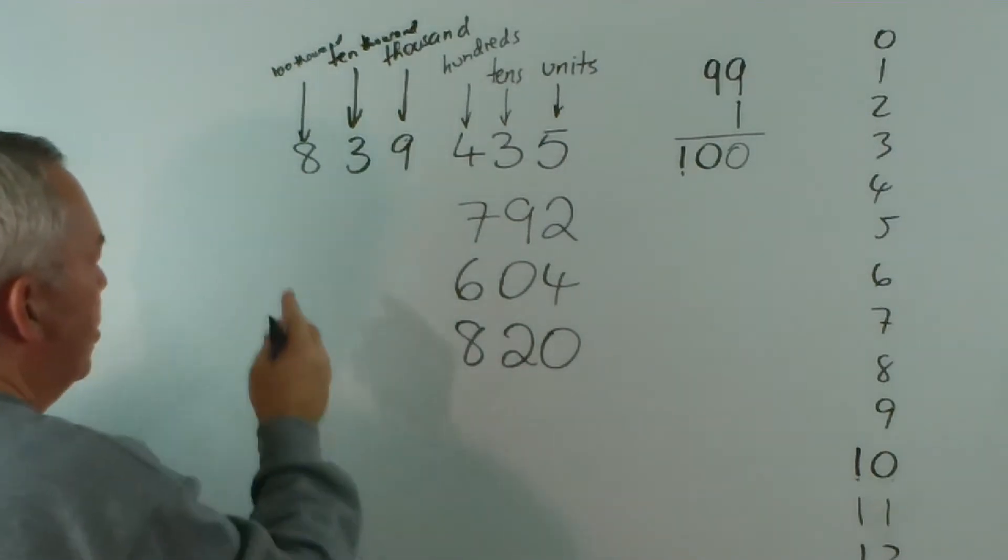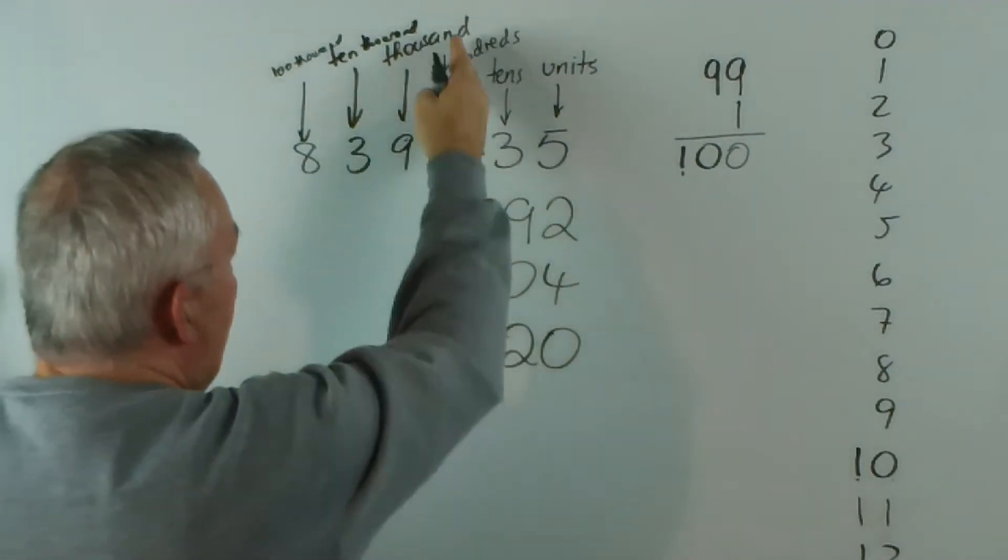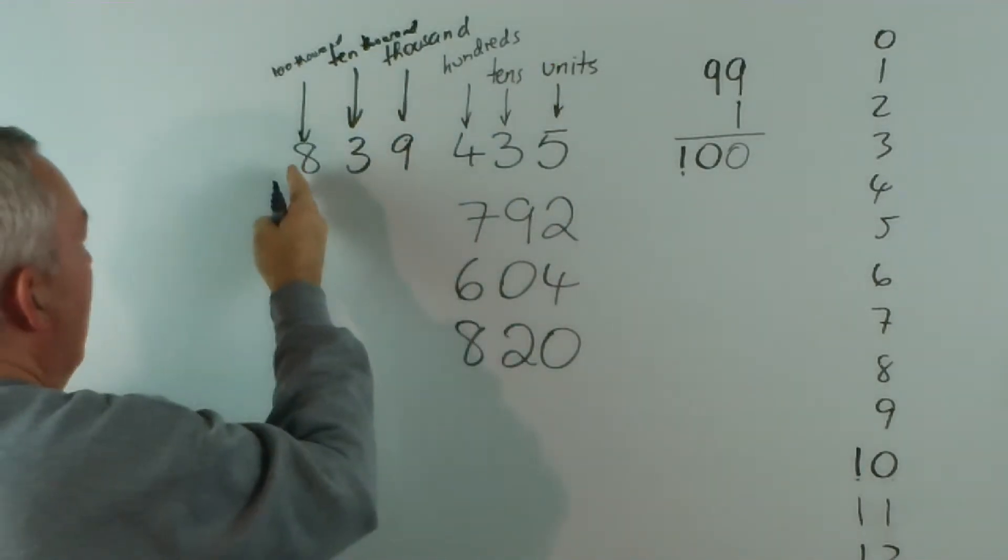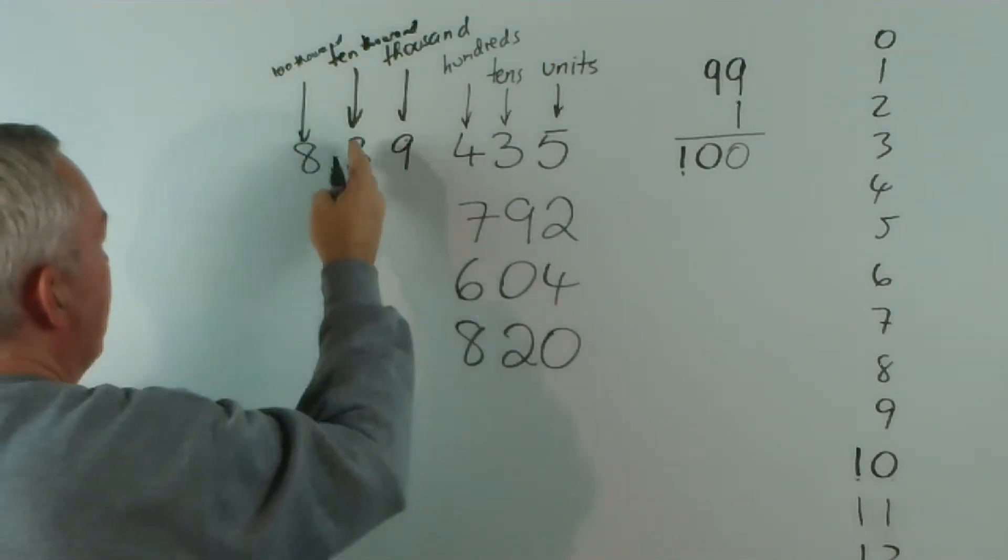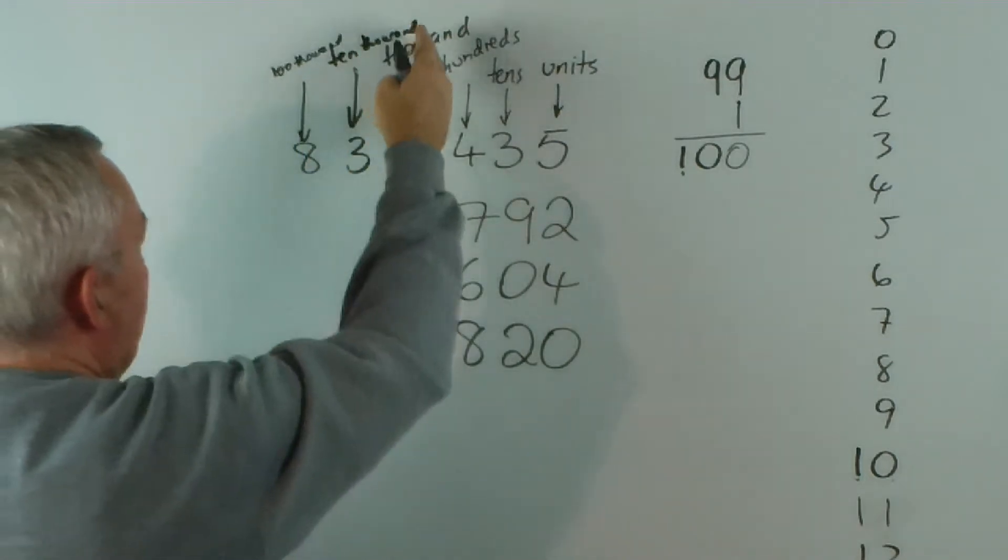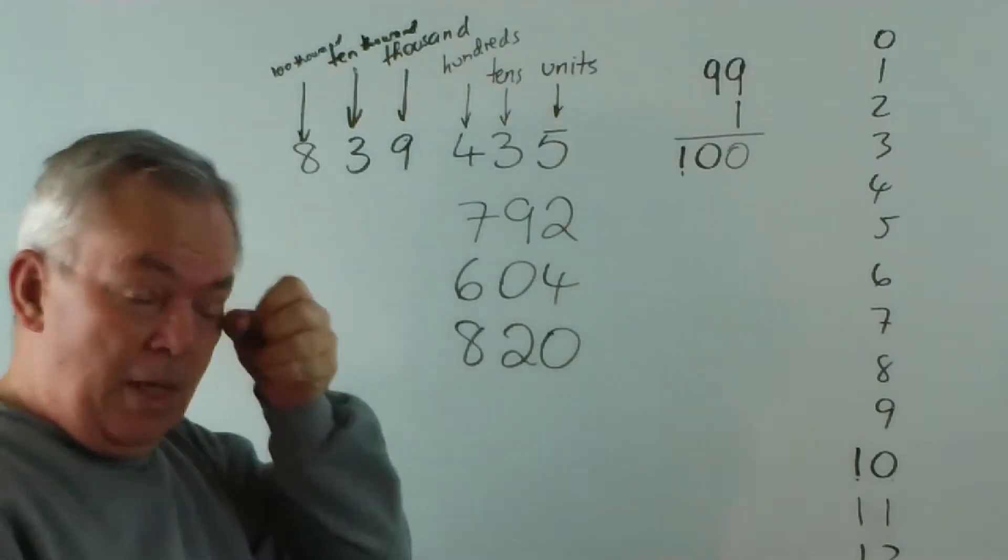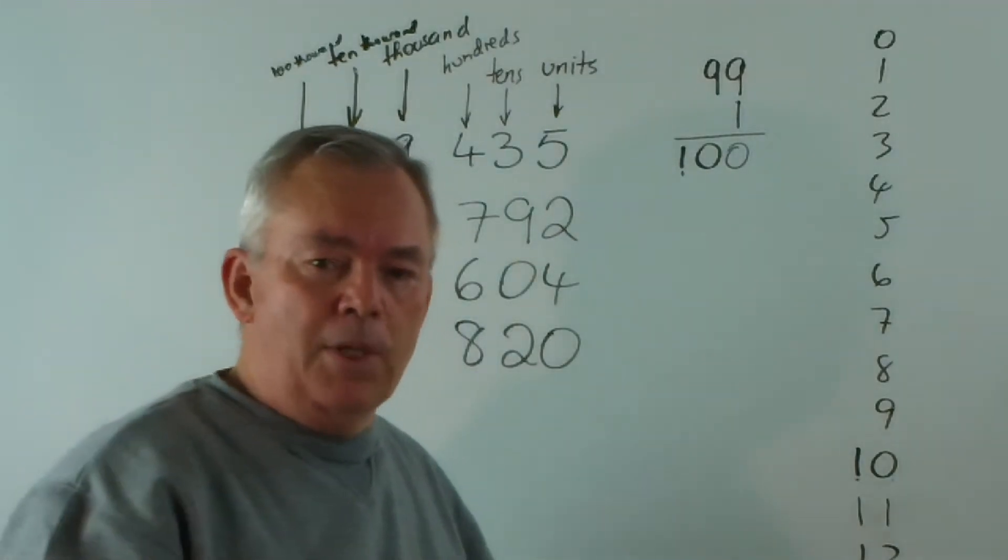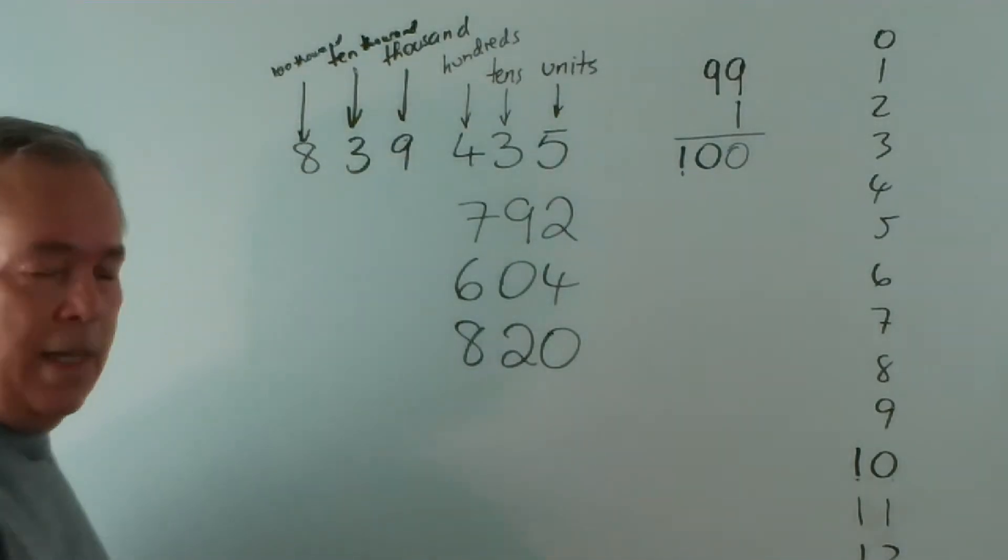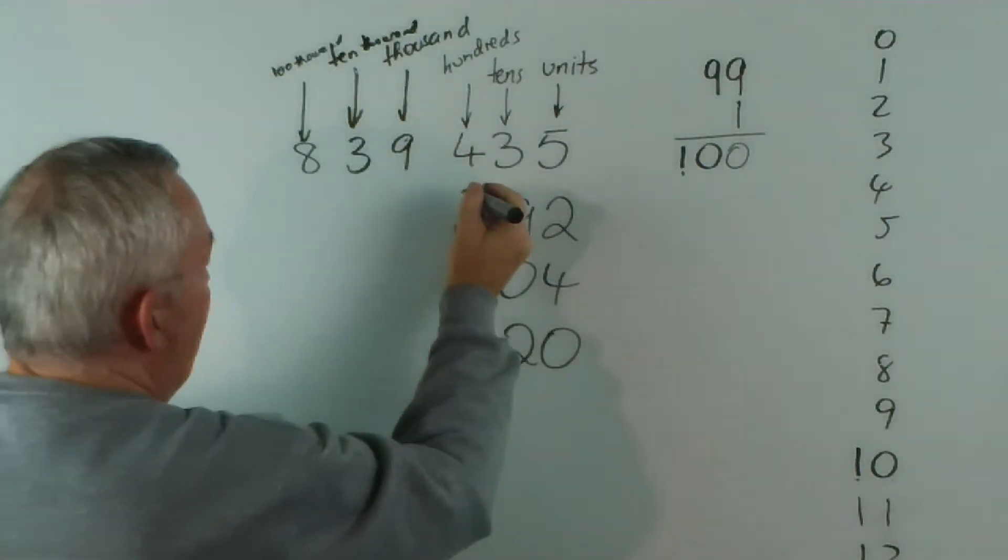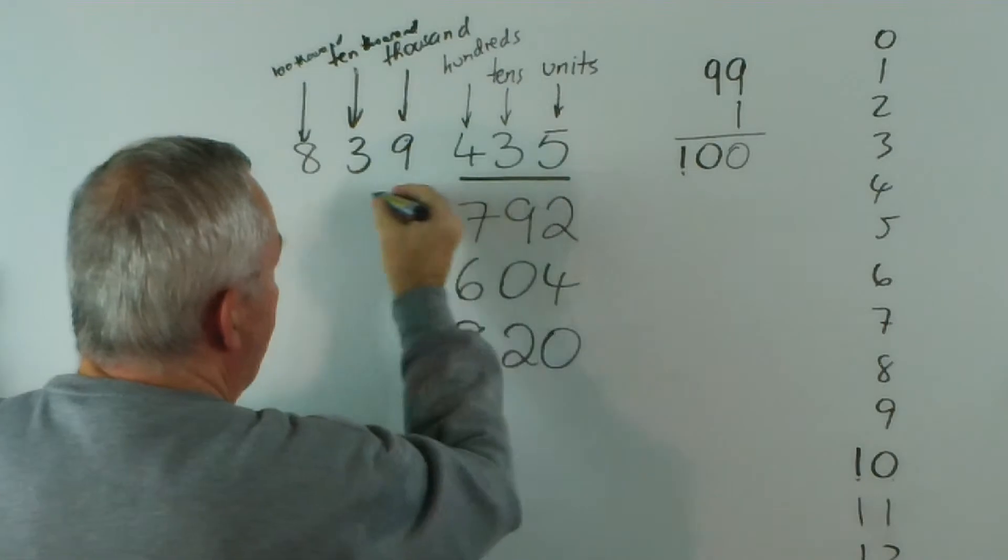Let's put an eight there. And here's the confusion. A lot of students, because we had four hundreds and thirty-five, a lot of students would go, eight hundred thousand, thirty thousand, nine thousand, four hundred, thirty-five. And it makes perfect sense to read a number that way, but it's not the way that we now read them.